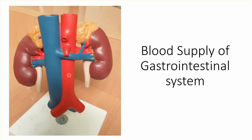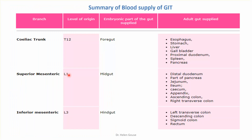The celiac trunk supplies the foregut, the superior mesenteric supplies the midgut, and the inferior mesenteric supplies the hindgut.